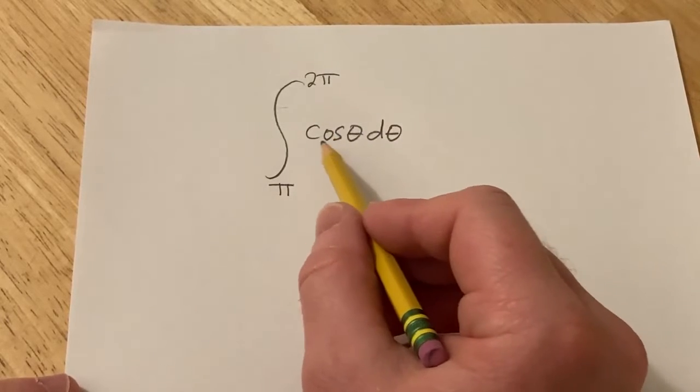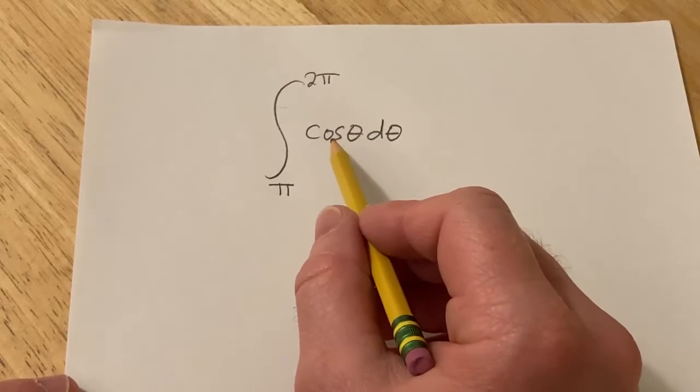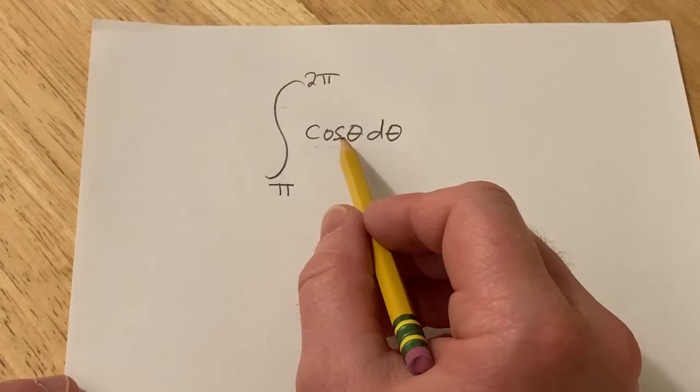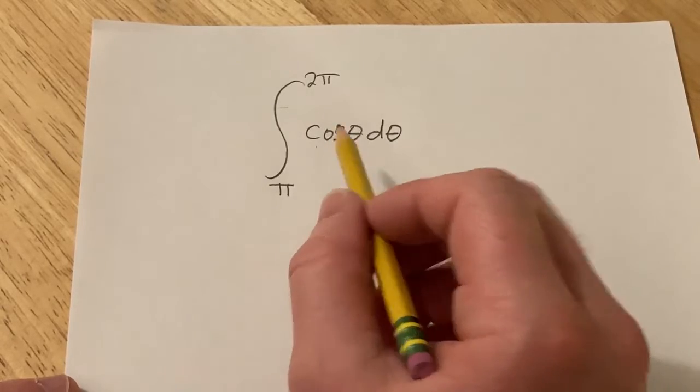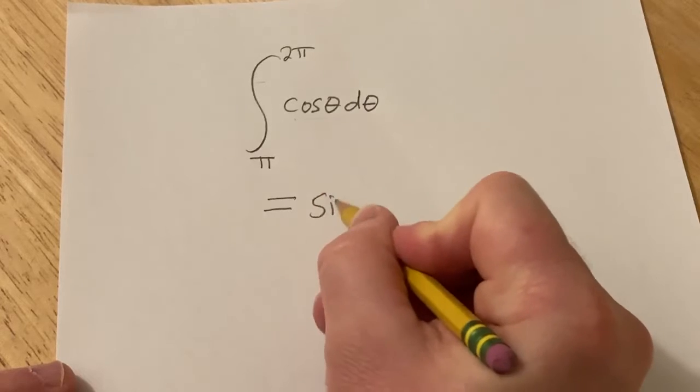So the first thing we have to do in this problem is integrate cosine. To do that you want to think backwards - what is a function whose derivative is cosine? Well the derivative of sine is cosine, so when you integrate cosine you just get sine. So we write sine theta.